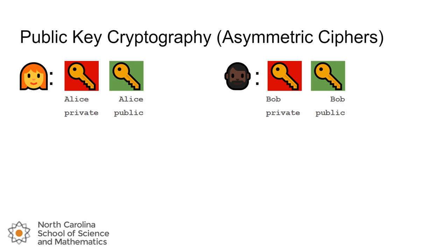In fact, if Alice were to encrypt a message with her public key, her public key could not decrypt the message she just made — she'd have to use the private key to do that. Any public key can encrypt a message that the paired private key can decrypt, and vice versa. But a public key could not decrypt a message that the same public key encrypted, and nobody else's keys could decrypt anybody else's message.